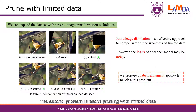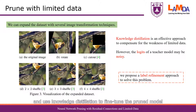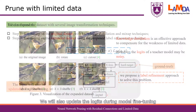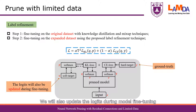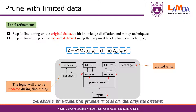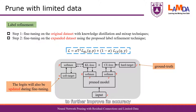The second problem is about pruning with limited data. We can expand the small dataset with several image transformation techniques and use knowledge distillation to fine-tune the pruned model. However, the logits of the teacher model may be noisy because the teacher model is not trained on this expanded dataset. So we propose a label refinement approach to avoid the influence of noisy labels. We will also update the logits during model fine-tuning. However, updating logits is dangerous if the student model is not accurate enough. So we divide the fine-tuning process into two steps. Firstly, we fine-tune the pruned model on the original dataset to obtain an accurate model. Then, this model will be fine-tuned on the expanded dataset to further improve its accuracy.